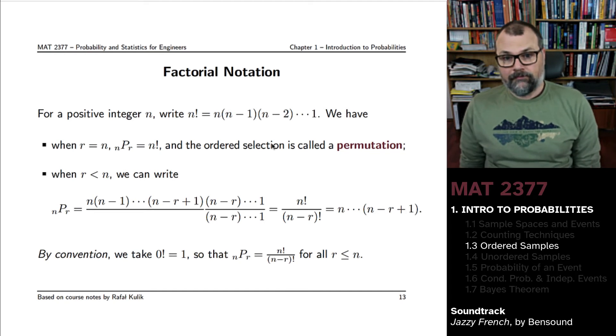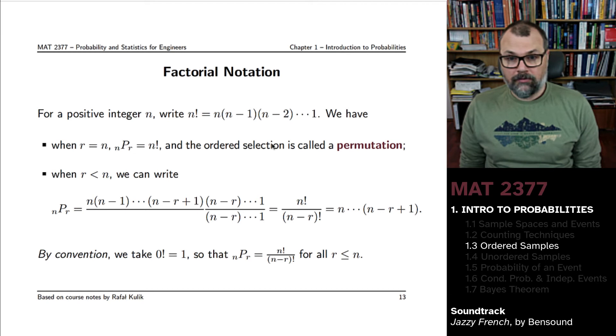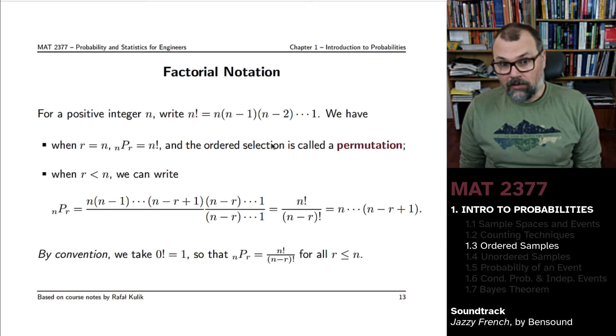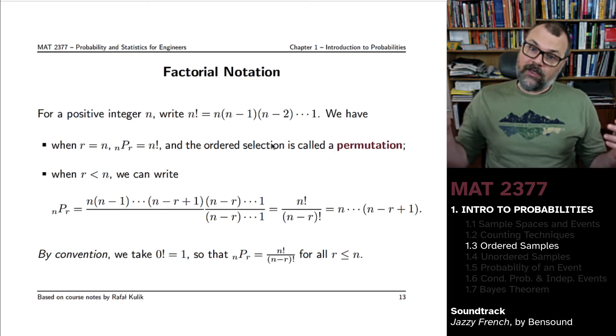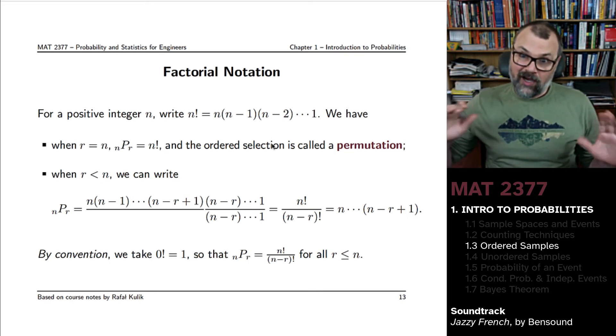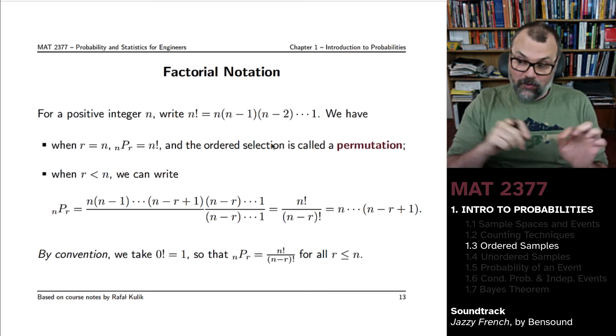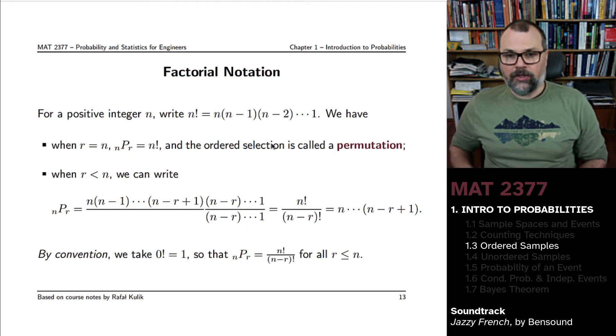In that case, the number of permutations would be N factorial. This is what we call the selection, a permutation. All of the digits, all of the options are permuted. They're all found in one location in your ordered sample.